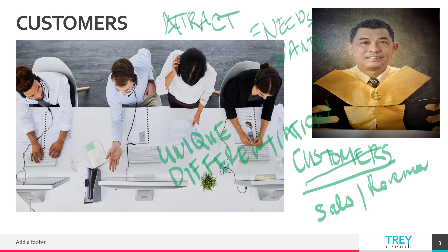Customers are attracted because you are unique and there is a differentiation in your offering. Take for example the Apple Company, the producer of the iPhone. What is unique to them is they have their own operating system and they are not Android. Because of that uniqueness, they can command a premium price for their product.